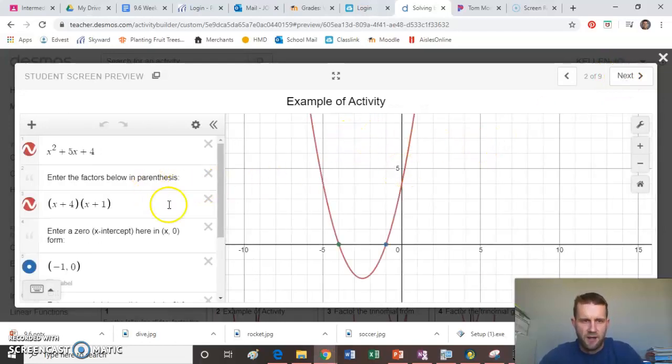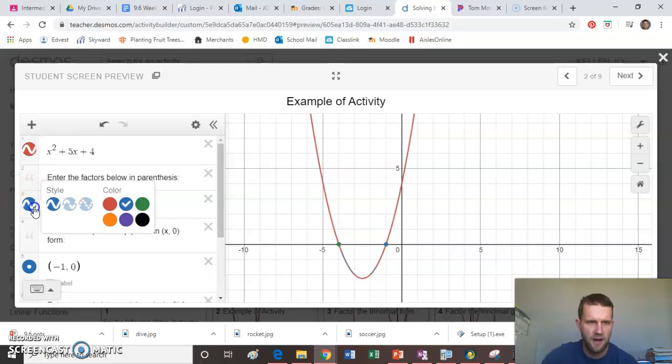You're going to be given some kind of polynomial or trinomial, and you don't have to put equals zero on these. Just leave them like this. We know that it equals zero when we look to the x-axis because the y value is zero. You're going to see directions to enter the factors below in parentheses, and you'll have to fill in the signs and the numbers. Here, it's two numbers that multiply to four and add to five, which is four and one. So you can put the plus one, plus four in any order. Notice if I change this color, it's the same graph.